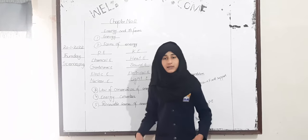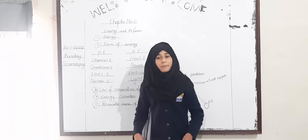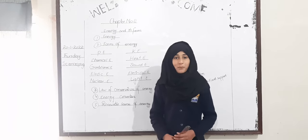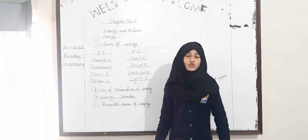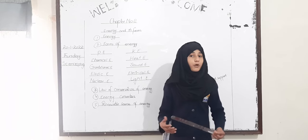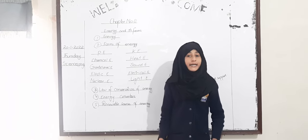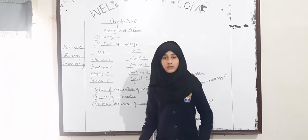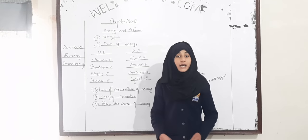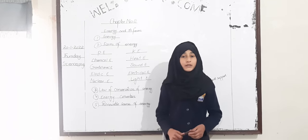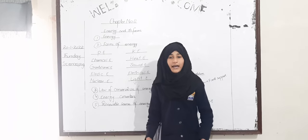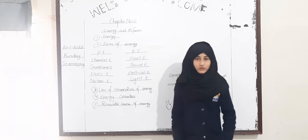For example, consider a pendulum. When the pendulum is at its highest point, potential energy is stored in it. When the pendulum is at its lowest point, kinetic energy is stored in it. But when the pendulum stops, energy disappears into the atmosphere in the form of heat, and is not destroyed.